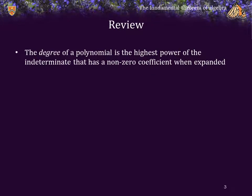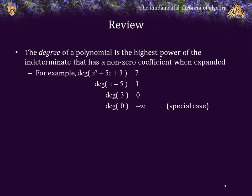The degree of a polynomial is the highest power of the indeterminate that has a non-zero coefficient when expanded. For example, the degree of that first polynomial is 7, the degree of a linear polynomial is of course 1, the degree of a constant that is non-zero is 0, and the degree of 0 is a special case given the degree of negative infinity.